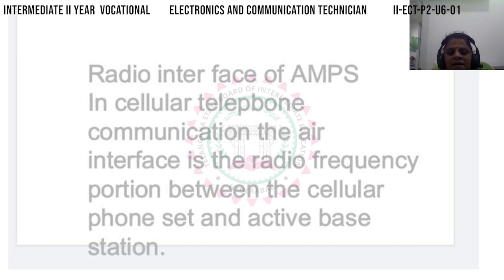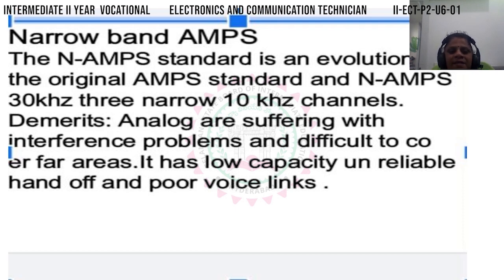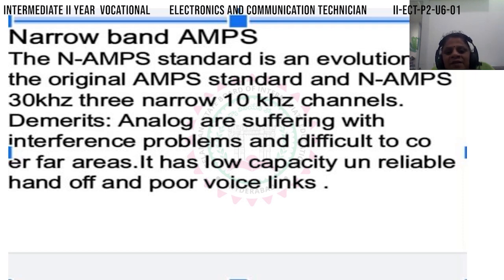The air interface is the radio frequency portion between the cellular phone set and the active base station. The cellular phone set communicates via radio frequency with the active base station. The AMPS standard uses 30 kHz channel frequency for all devices connected to the radio interface in cellular telephone communication.